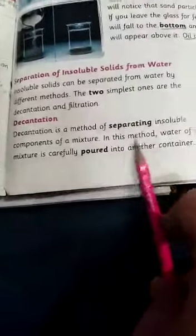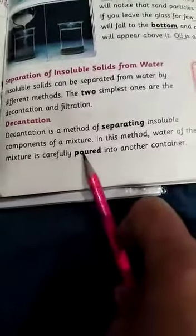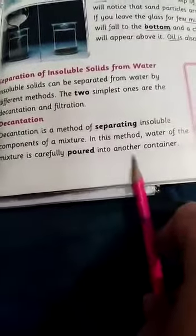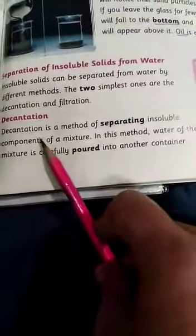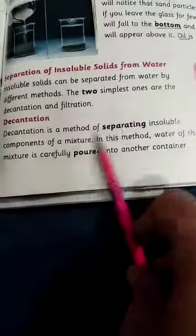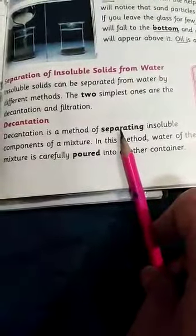Decantation is a method of separating insoluble components of a mixture. In this method, water of the mixture is carefully poured into another container. This is a very simple method. We put the insoluble solids for a while, so when we pour it into another container...